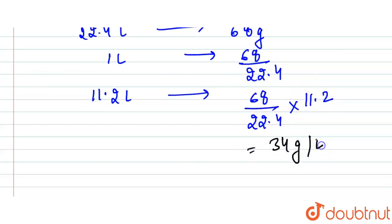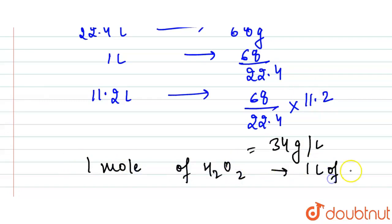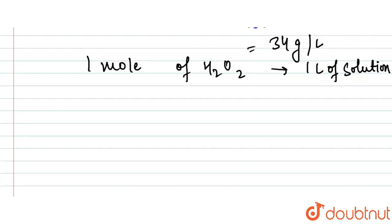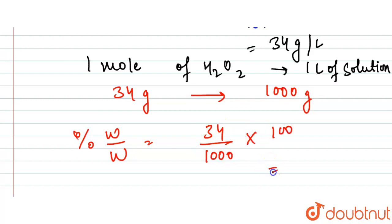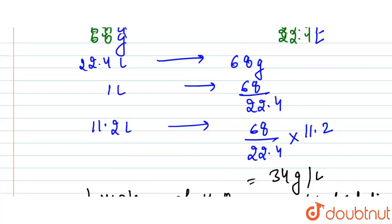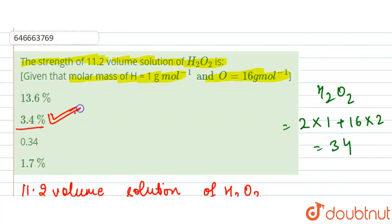So 34 grams of H₂O₂ is present per liter of solution. Assuming one liter of solution weighs approximately 1000 grams, the percentage weight by weight is (34/1000) × 100 = 3.4%. Therefore, the strength of the 11.2 volume H₂O₂ solution is 3.4%.